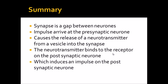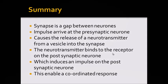This then induces an impulse on the post-synaptic neuron and therefore, the impulse can then continue on to the effector or to its target cells. This enables a coordinated response. What this means is it means that certain cells or certain effectors can be targeted and not all at once. The fact that you have gaps between the neurons means that some effectors can be targeted and stimulated and others cannot.